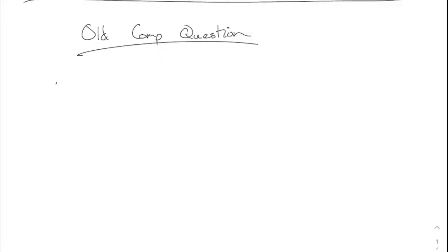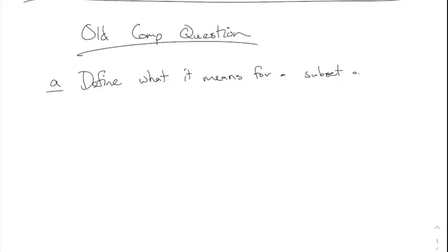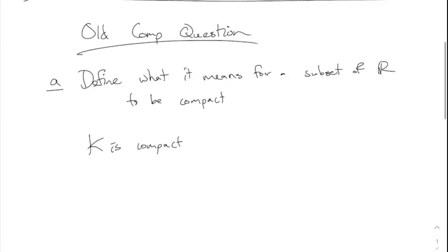Part A. They give you questions like this on the comp sometimes. Define what it means for a subset to be compact. Anybody happen to remember the definition? This is just like, do you remember the definition or not? K is compact. If not, you can turn the page and look at your notes from last time. K is compact means... anybody say it?